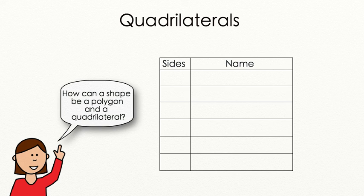But wait, how can a shape be a polygon and a quadrilateral? Well remember, a polygon is just a closed plane figure that has at least three line segments creating the shape. But within that, different polygons have many different sides and so we have to give those names.